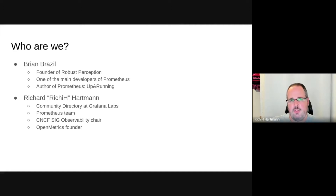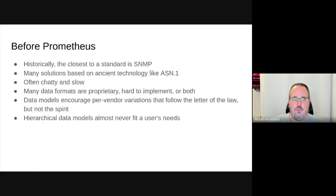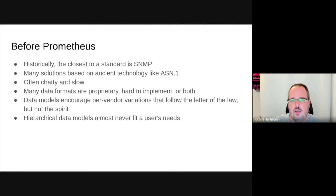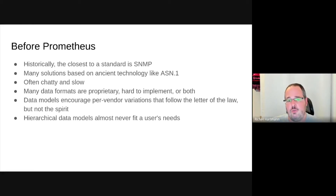We couldn't really be talking about OpenMetrics without also talking about Prometheus. Before Prometheus, historically, the closest we had resembling a common standard within monitoring was SNMP. Many of the old solutions are based on what is today ancient technology — like ASN.1, which is front and center in SNMP. While it's a great piece of engineering, it's not matching the design and engineering practices of today. Many of those protocols are chatty and slow, and can often be proprietary, hard to implement, or both.